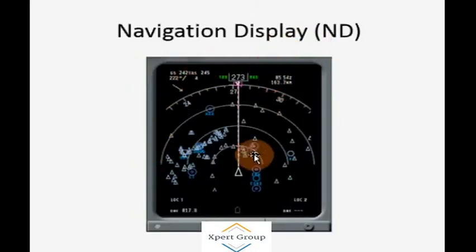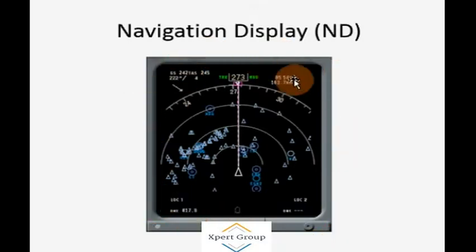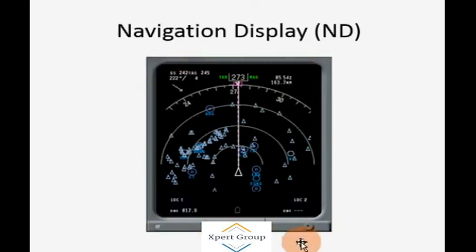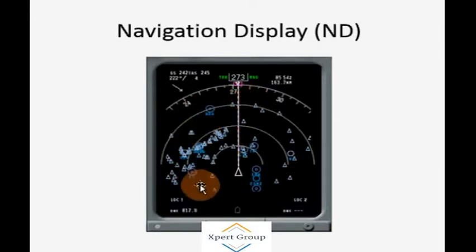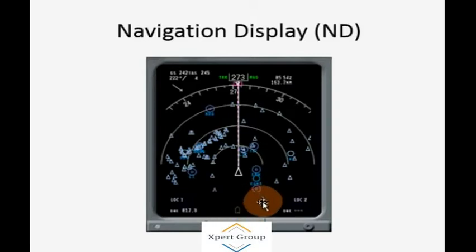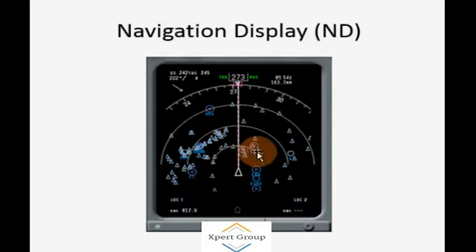ND means Navigation Display. This is another multi-function display, or MFD — a smart multi-function display — which provides good information to the crew. It is essentially a kind of map that provides navigational aid to the air crew, and so this kind of display is called the Navigation Display.